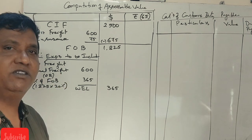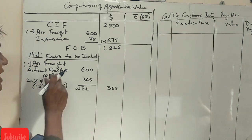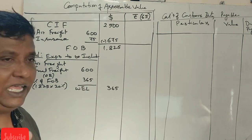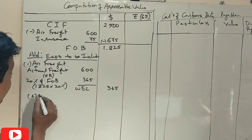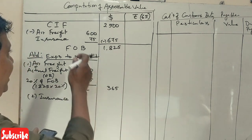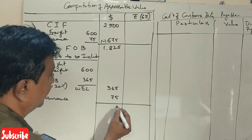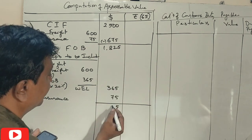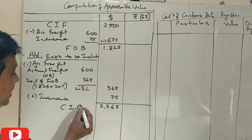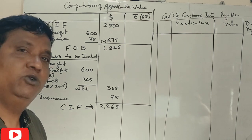The CIF value is $2,500. The insurance is $1.125, and the actual insurance is $75. The air freight taken is $365. The total comes to $2,265. Whichever is lower should be taken for the assessable value calculation.